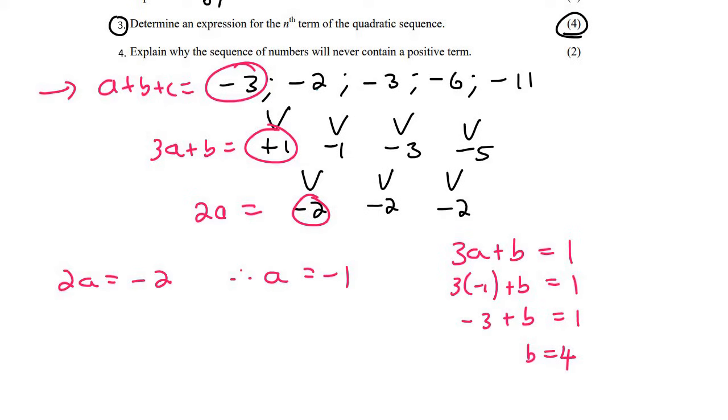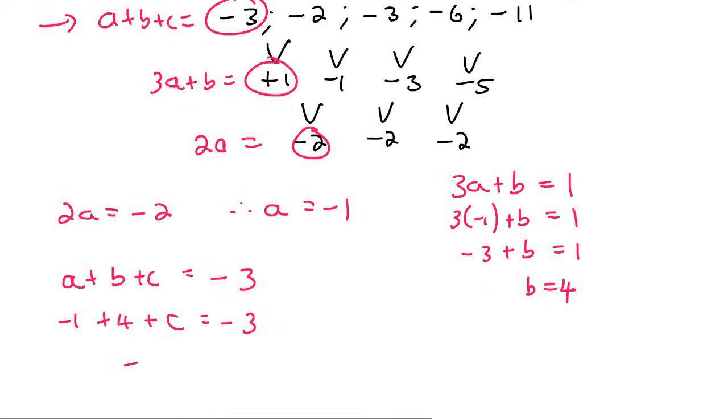And then we can go up to the last level, which says that A plus B plus C is equal to minus three. And so A is minus one, B is four, C is, oh, that's what we're looking for, and that's equal to minus three. And what we'd find is that C is going to be equal to negative six. And so therefore,